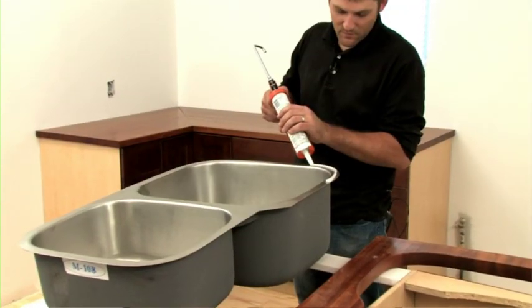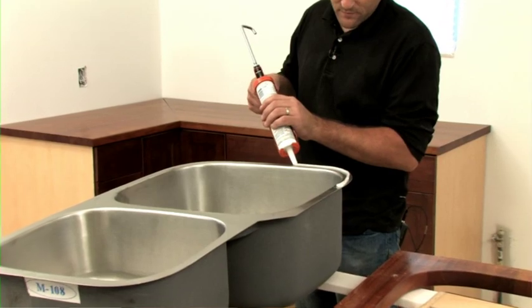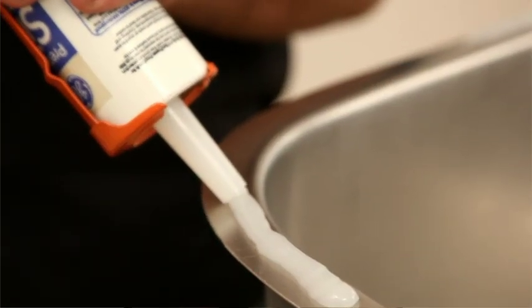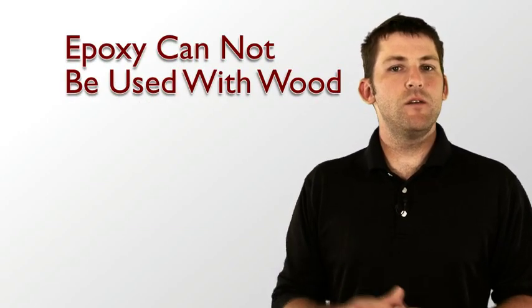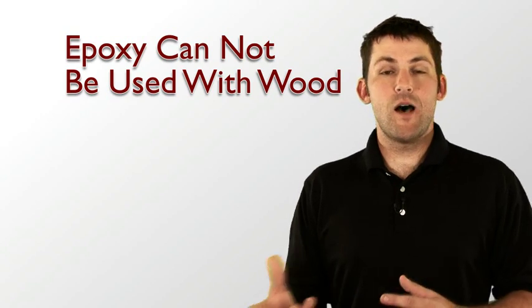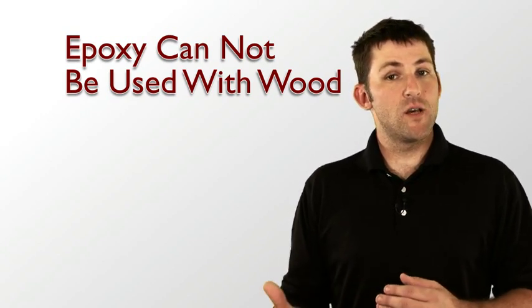CraftArt wood countertops will come to you with the cutouts already in them. Sink cutouts, stove cutouts will be done at our shop, if they're on your template. When installing a sink, you will need silicone. Use silicone on the rim of the sink in an undermount application. With granite, when you install a sink, you use epoxy. Epoxy cannot be used with wood. Epoxy does not bond to wood as well as silicone does.